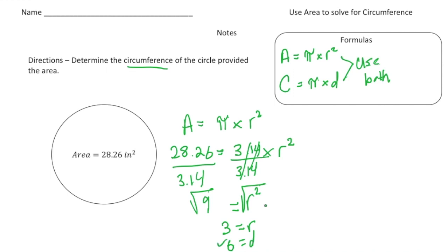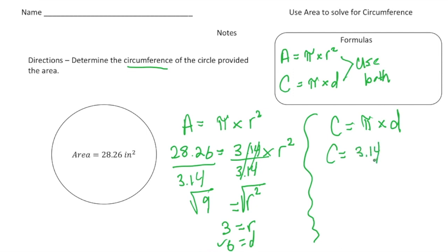Put a little check next to that — that's important. Now on this other side, let's use our second formula, which is circumference equals pi times the diameter. Let's plug in what we know: circumference is going to be 3.14 times 6 — that's our diameter. And when I do 3.14 times 6, I get an answer of 18.84 inches. So the circumference is 18.84 inches.